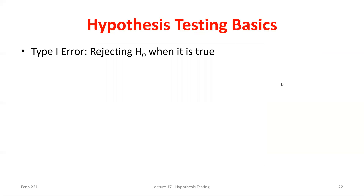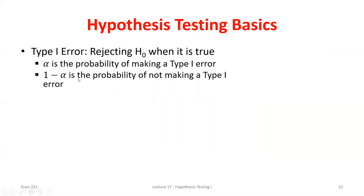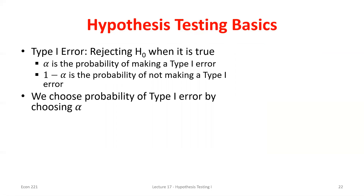Type 1 error is when we reject the null even though it's true and we shouldn't have — that's our alpha. One minus alpha is the probability we don't make a Type 1 error, the probability we make the correct decision. Just like with confidence intervals where you choose 90, 95, or 99% confidence, here you'll be told or will choose 1%, 5%, or 10% significance levels. Alpha is the significance level — typically set at low values.